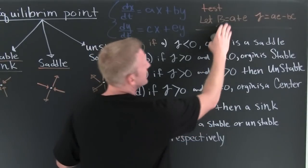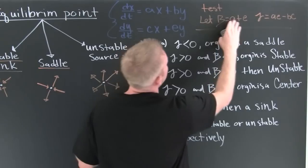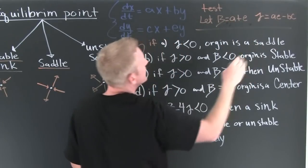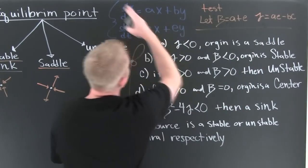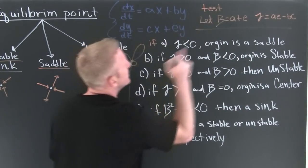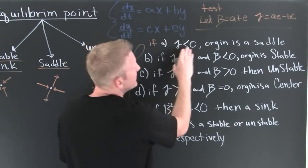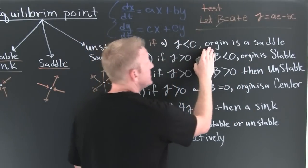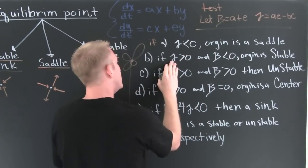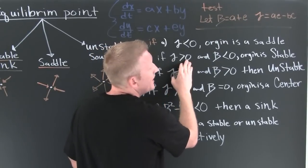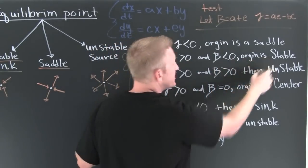For the test, let's look at the trace. The trace is the sum of the first diagonal — yes, a plus e. And we're going to look at the determinant. We'll let the trace be beta and the determinant be gamma. If gamma is smaller than zero, then the origin is a saddle — done deal. If, however, the determinant is bigger than zero and beta is smaller than zero, then your origin is stable.